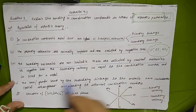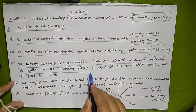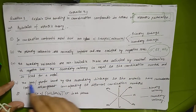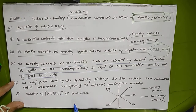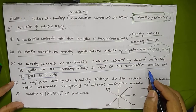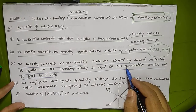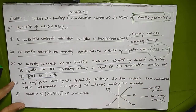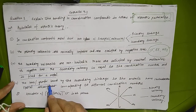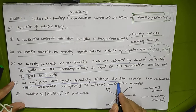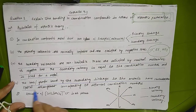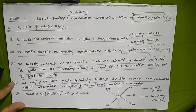The secondary valency is not ionizable. It is satisfied by neutral molecules or negative ions. The secondary valency is equal to the coordination number of the metal, and it is fixed for a particular metal. The ligands bound by secondary linkage have a specific spatial arrangement corresponding to different coordination numbers.